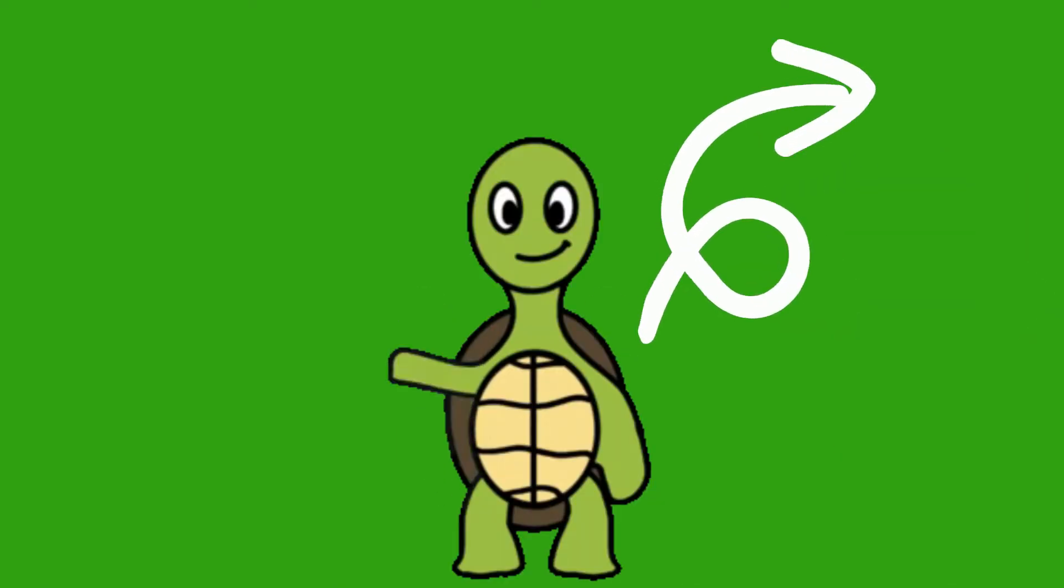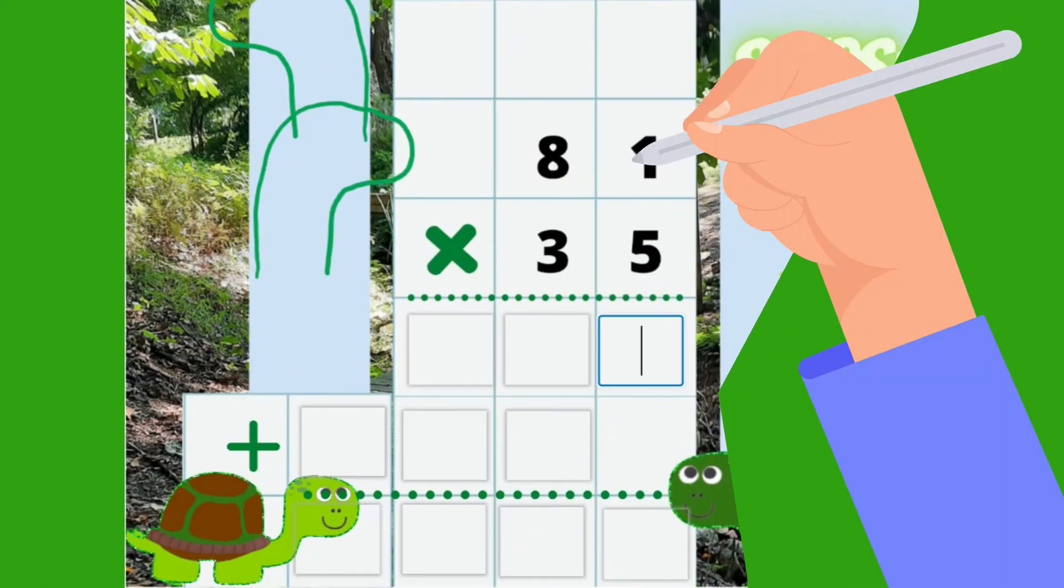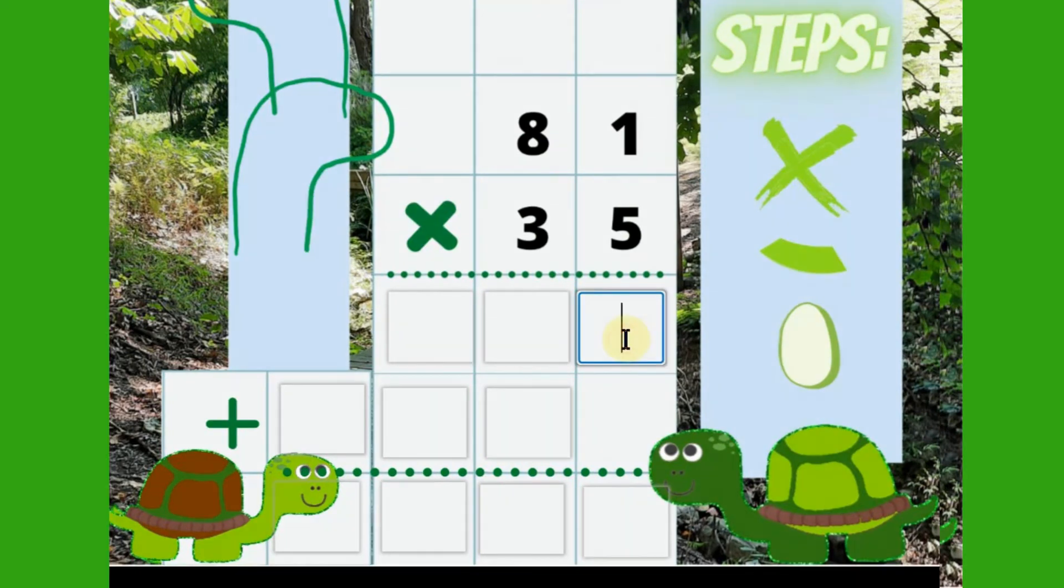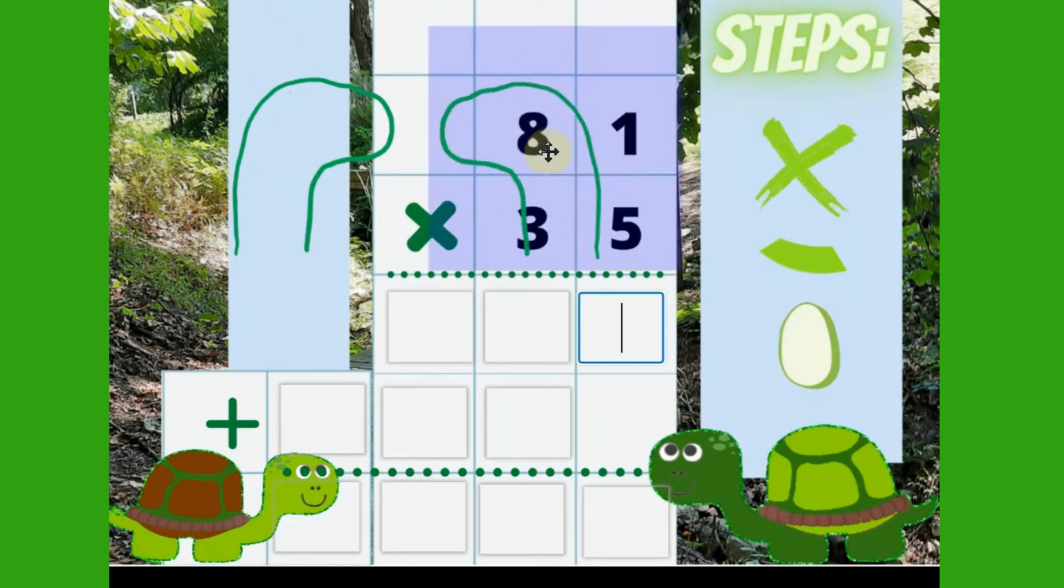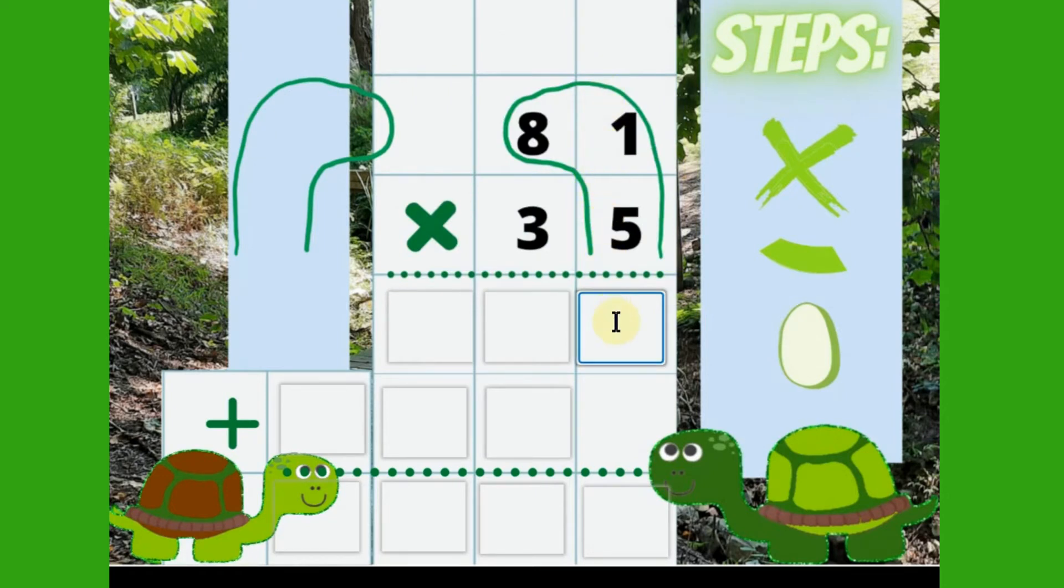Let's look at another one. First draw the turtle's head. Multiply the ones place. Now the ones times the tens place.